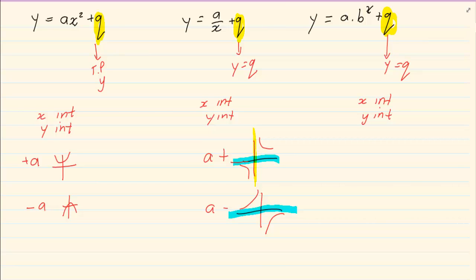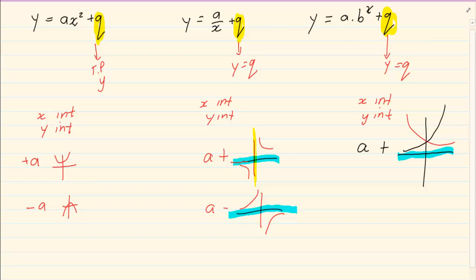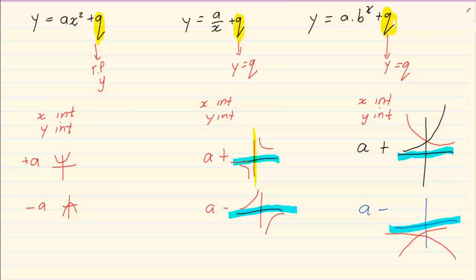Then we have the exponential graph. If a is positive, the graph is above the asymptote. Now remember there can be two cases when it is above the asymptote — it can be coming from the left or it can be coming from the right. If a is negative, it is below the asymptote. How do you determine whether the exponential graph starts from the left or from the right?